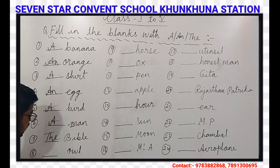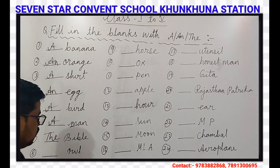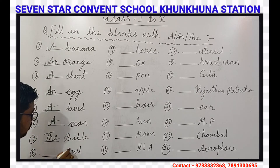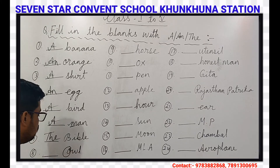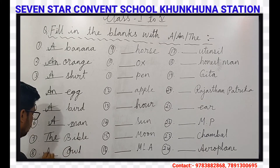Our next question is Owl. The first letter of Owl is O, and O is a vowel, so AN will come here.